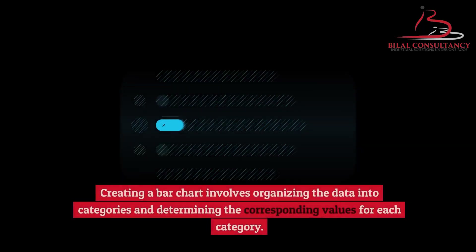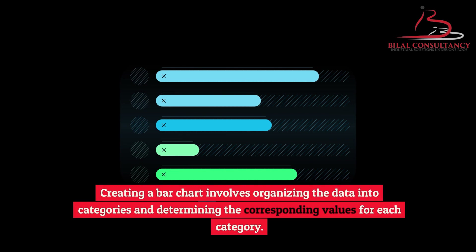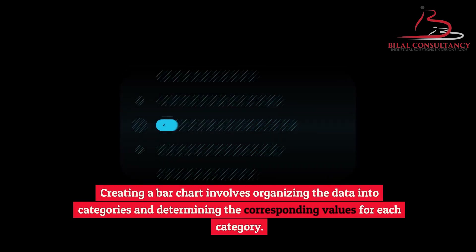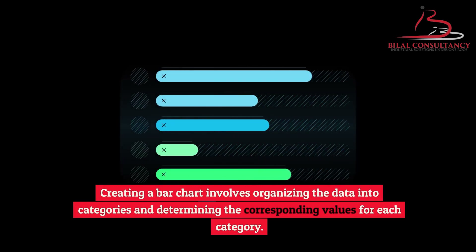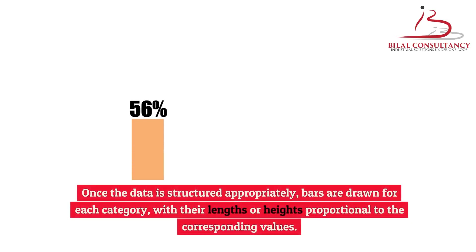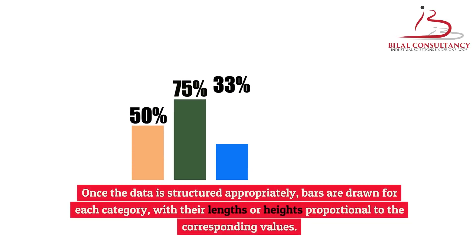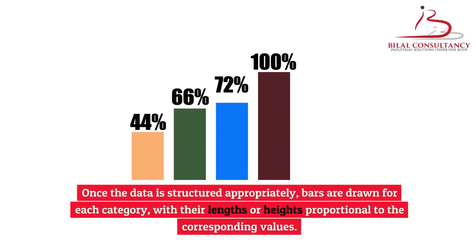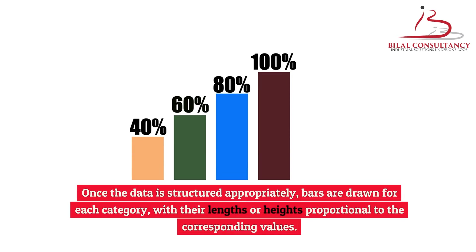Constructing a bar chart involves organizing the data into categories and determining the corresponding values for each category. Once the data is structured appropriately, bars are drawn for each category, with their lengths or heights proportional to the corresponding values.